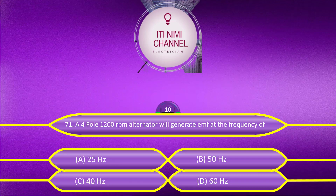A 4-pole, 1200 RPM alternator will generate EMF at a frequency of: Option A, 25 hertz; Option B, 50 hertz; Option C, 40 hertz; Option D, 60 hertz. The answer is Option C, 40 hertz.